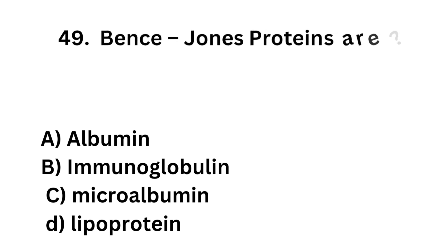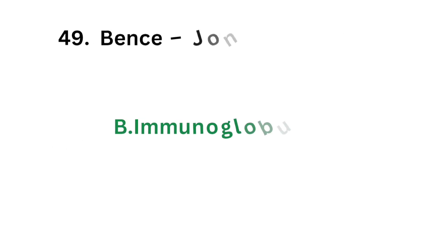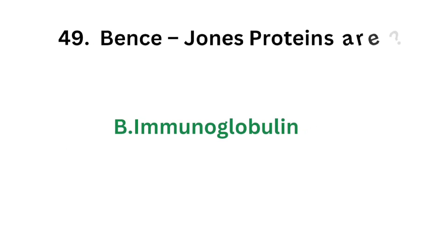Question number 49. Bence Jones proteins are: Option A - Albumin; Option B - Immunoglobulin; Option C - Microalbumin; Option D - Lipoprotein. The correct answer is Option B, Immunoglobulin. Bence Jones proteins are immunoglobulin.